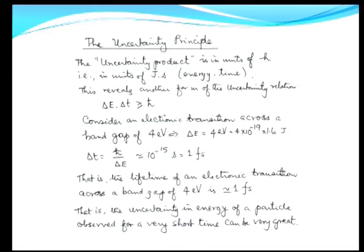Another form of the uncertainty relationship is: if you try to measure the energy of a quantum particle over a very short period of time, the result you get is uncertain by a large proportion. You cannot determine the energy of a quantum particle precisely unless you make the measurement over very long periods of time. That is what it means.